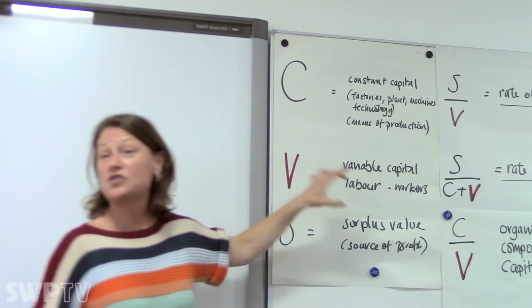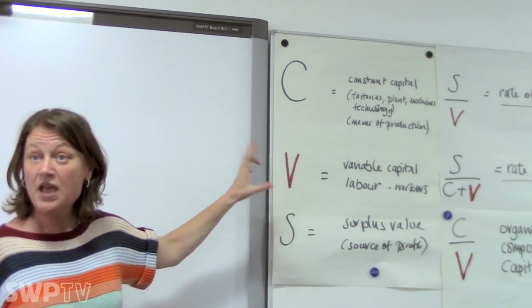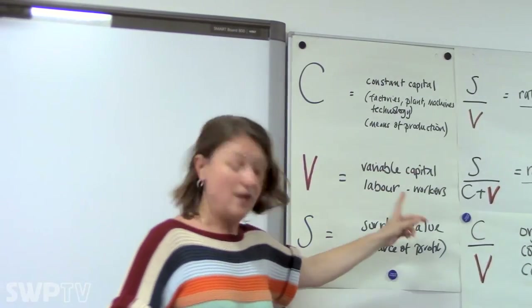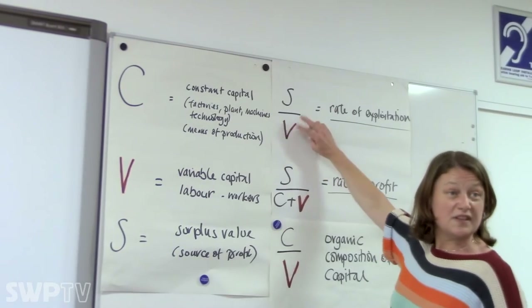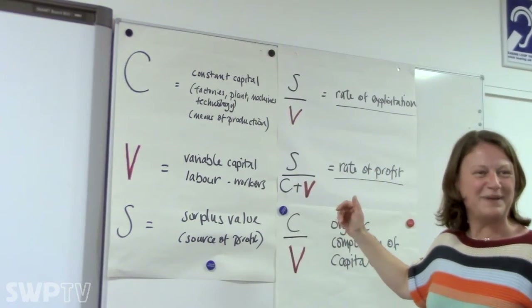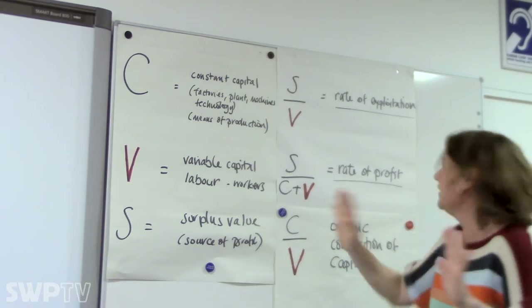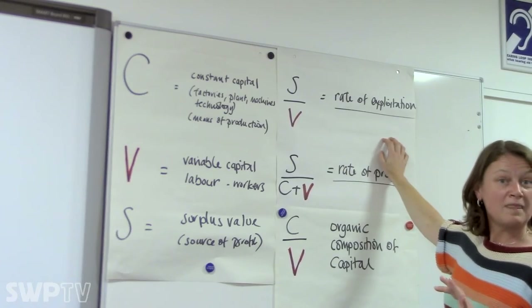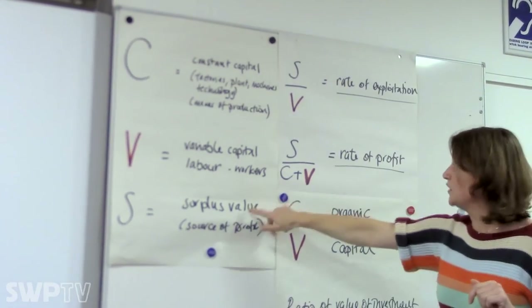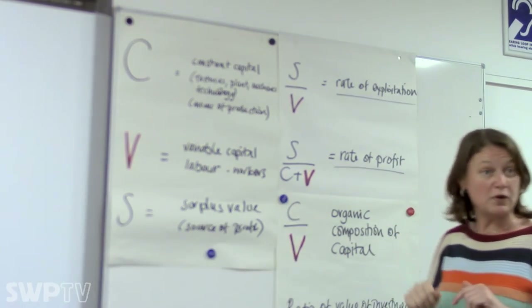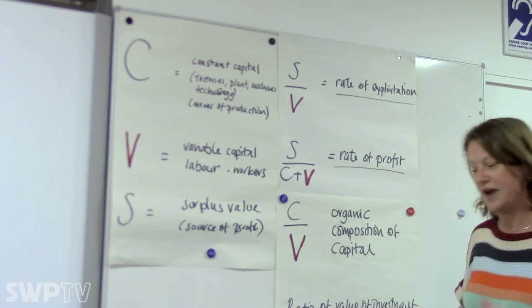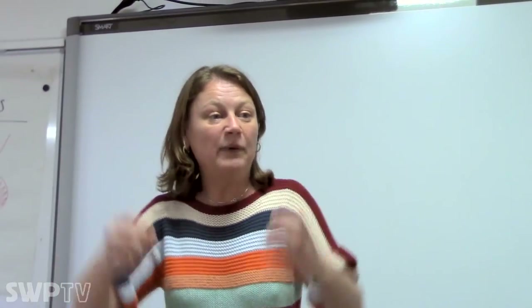Because variable capital — labor — is the only thing that expands its value when put to work, not only does it imbue its value into the commodities that we buy, but it is also the source of profits for the capitalist. So we have surplus value S over variable labor V — that is the rate of exploitation. The rate of profit on the other hand is S over constant capital plus variable capital, C plus V. There are levels at which we have to abstract in order to show theories, so bear with me on that.